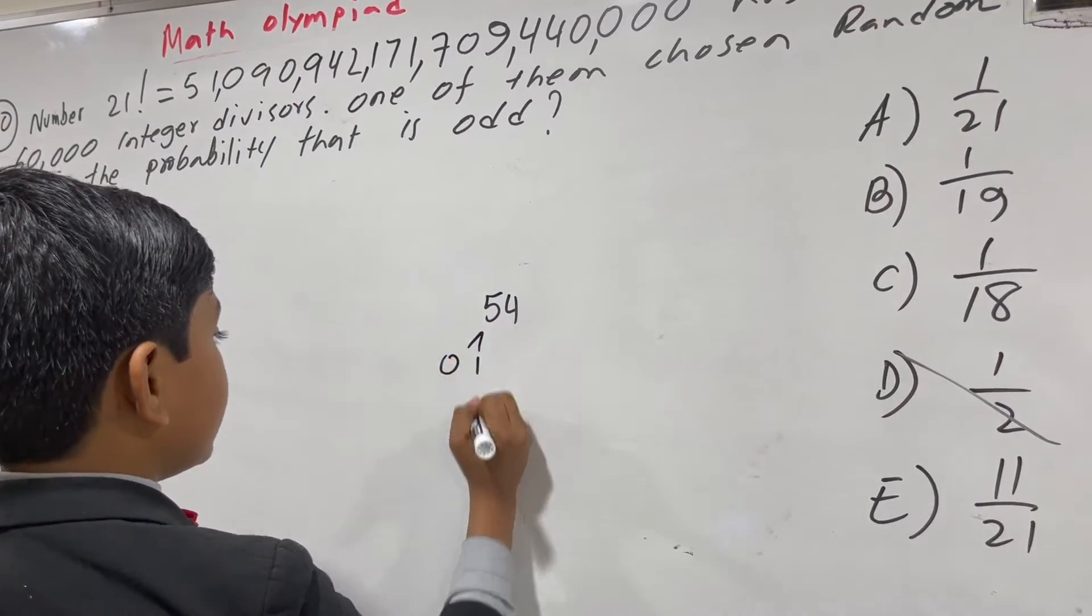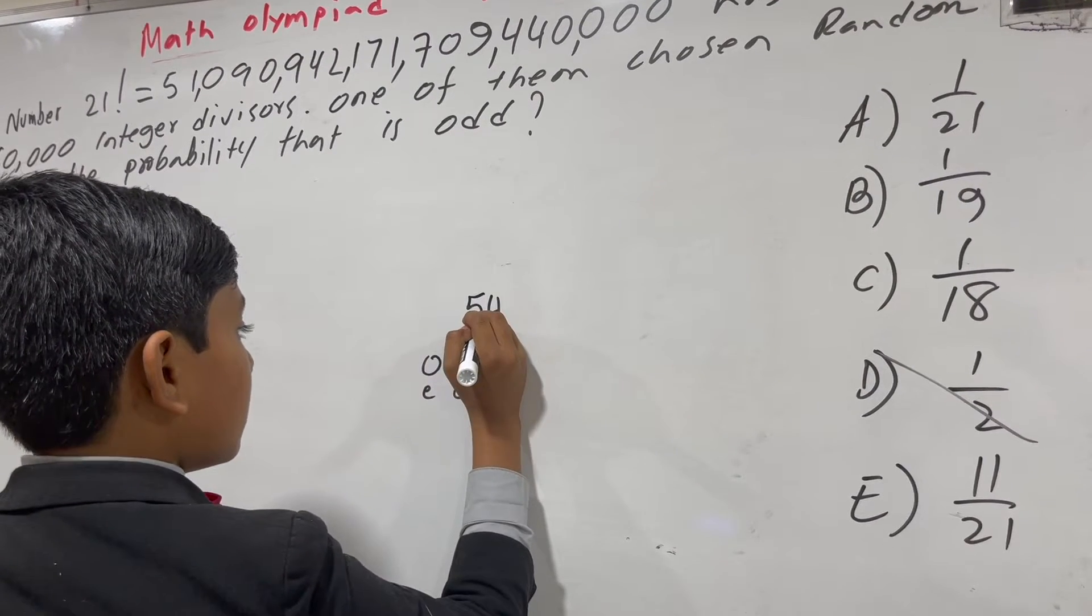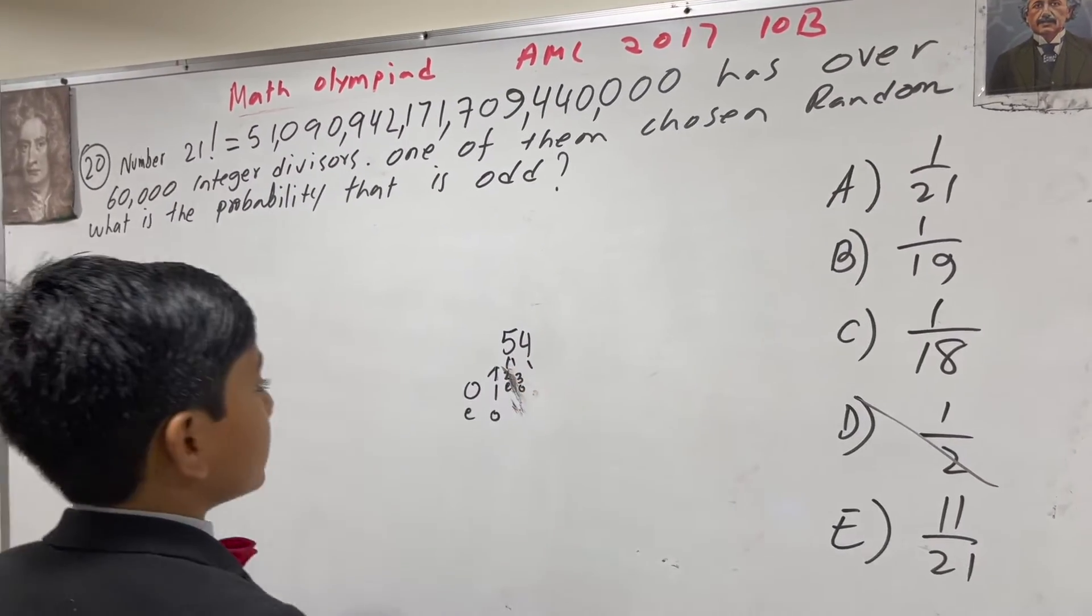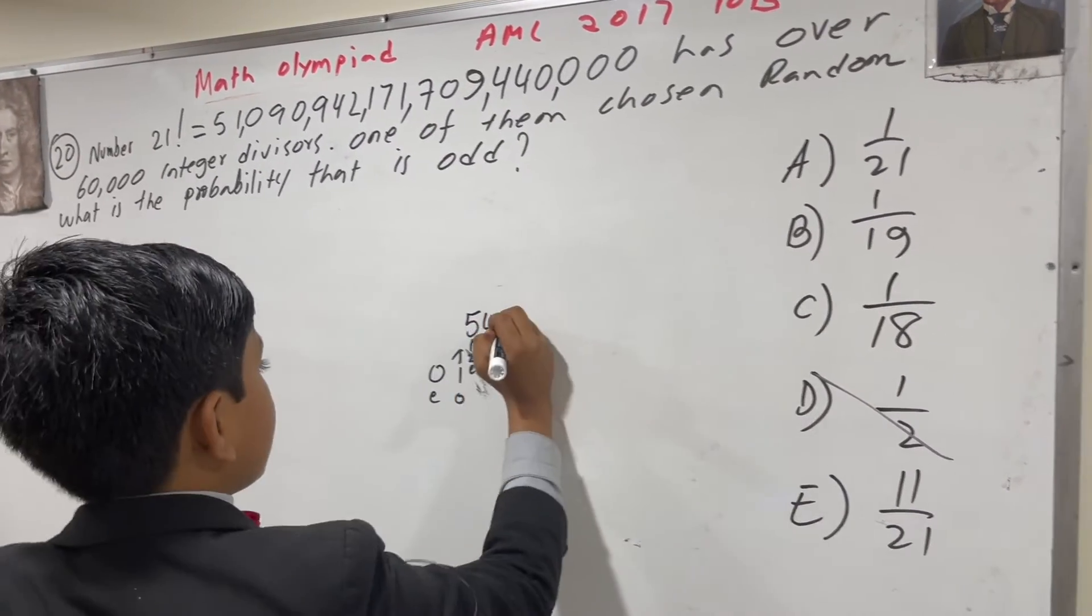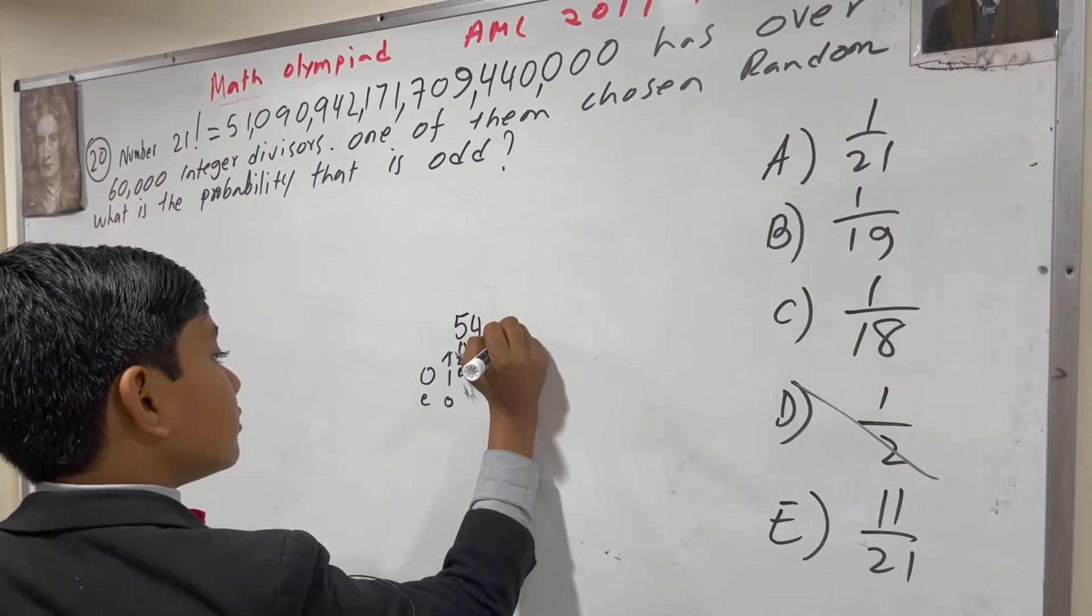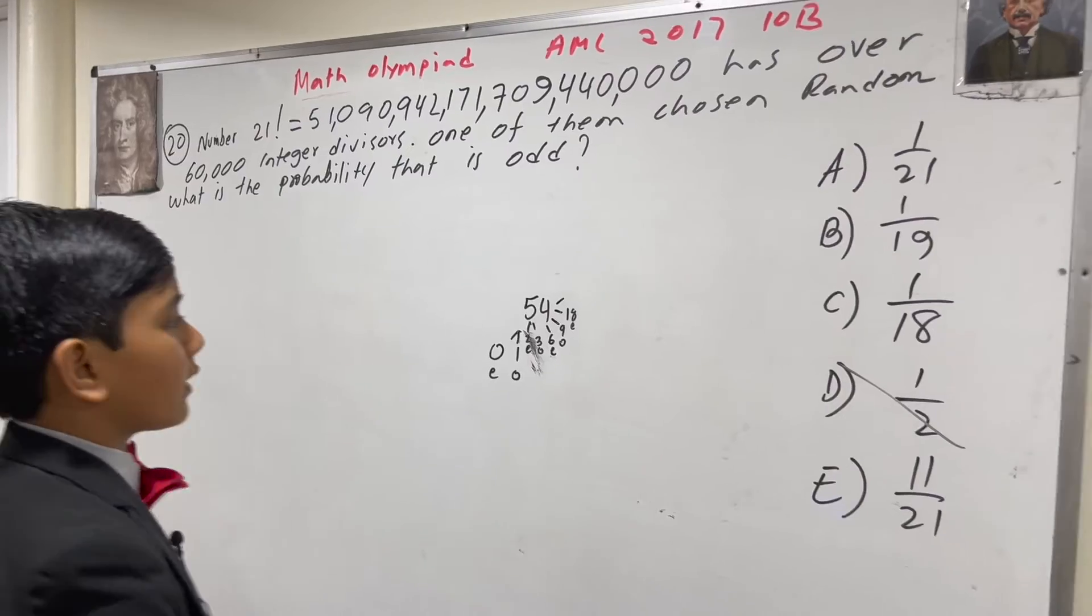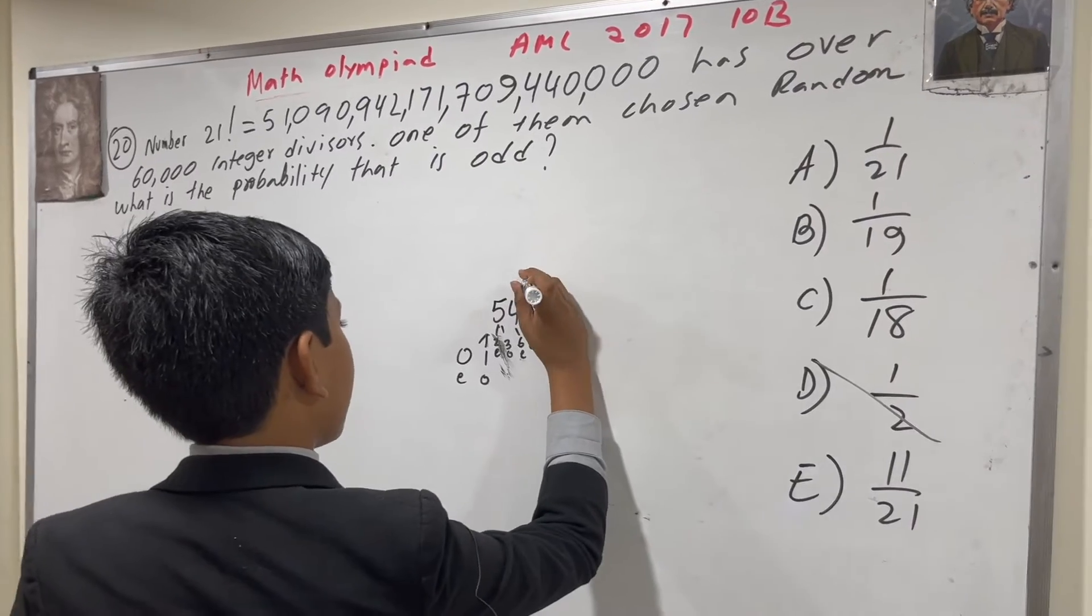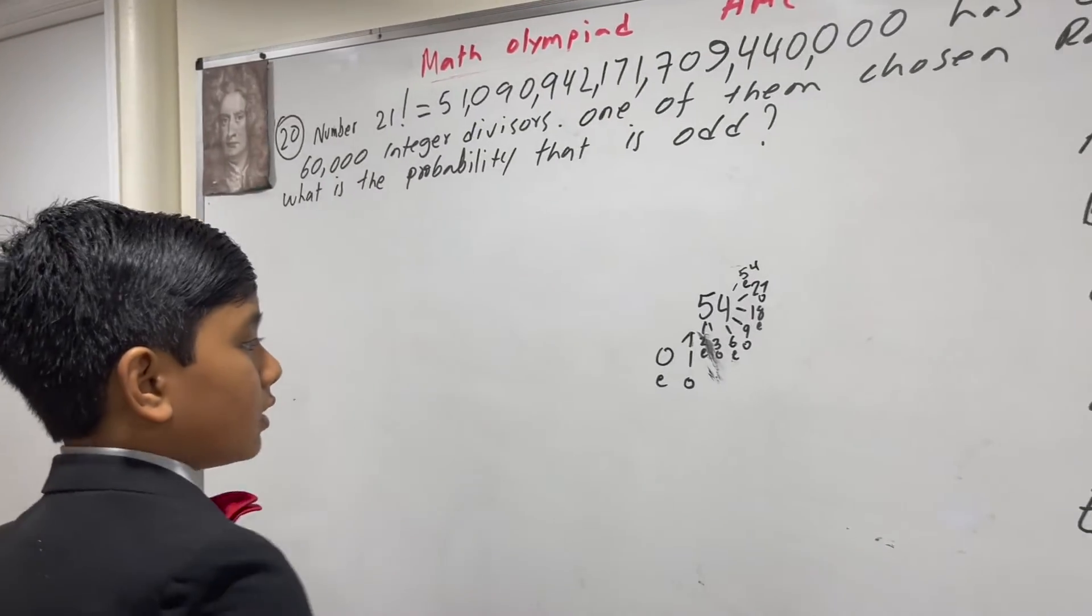So we have: zero is even, one is odd, two is even, three is odd, four is not a factor, but six is, which is even, and nine also is, which is odd, and 18 also is, which is even.